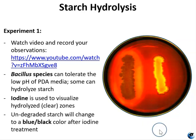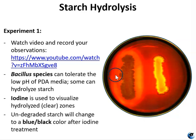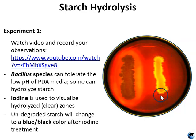Iodine reacts with starch and changes to a bluish-blackish color — you can see this dark color in the media. That is how you can see where the starch is still intact and where it has been hydrolyzed. A lighter zone of hydrolysis means that species is positive for starch hydrolysis, while the dark color around the bacteria means that species is negative. If given enough incubation time, the positive species would probably hydrolyze all the starch in the plate.